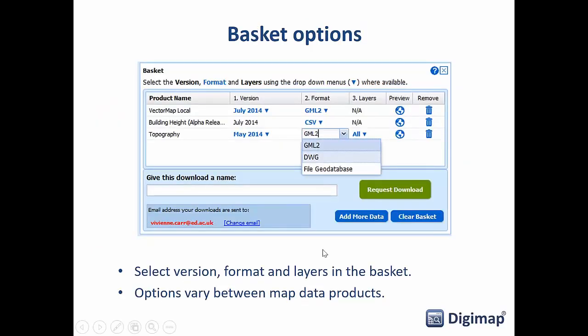In the basket you can see the format options. We used to have a default format for each product but now we make you choose, which ensures you pay attention and select the best format for the software you're using. The main difference is usually whether you're selecting a CAD-based format like DWG for CAD software, or a spatial database or shapefile for a GIS package. QGIS being a GIS package, we'd always recommend going for a spatial format.